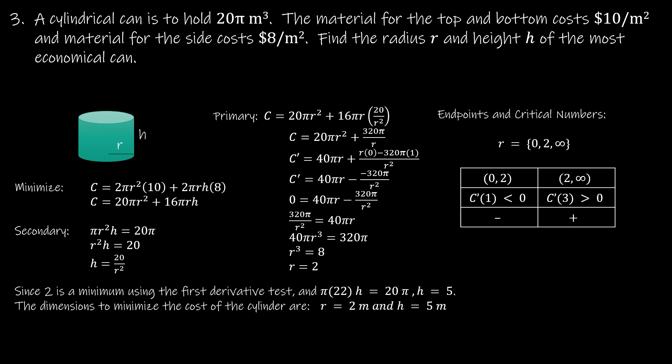Question 3, we have a cylindrical can. This one is giving us volume. The material for the top and bottom costs $10 per meter squared, and the material for the side costs $8 per meter squared. So this is getting more and more complicated. So I am trying to make the most economical can. So I'm trying to minimize the cost.